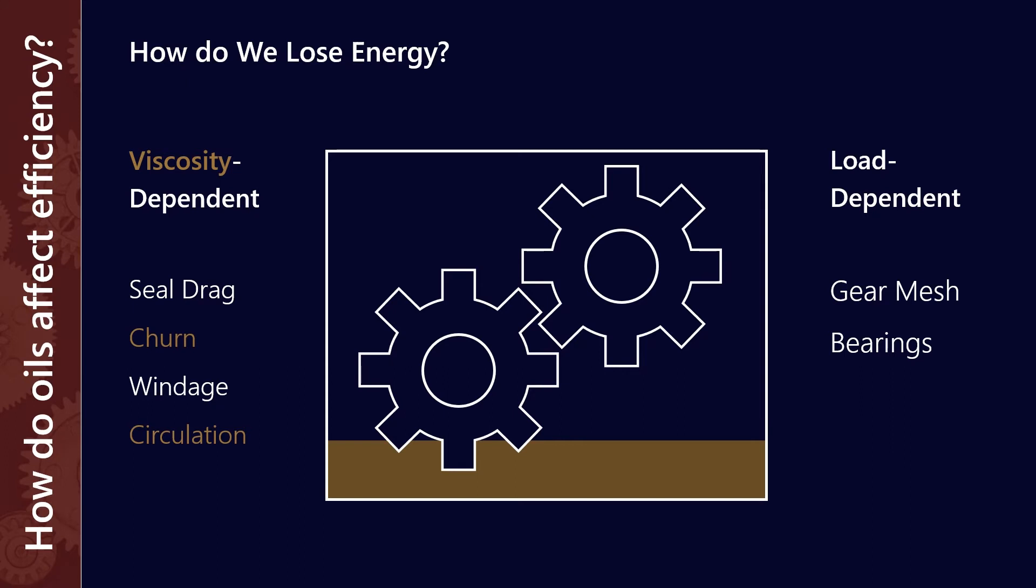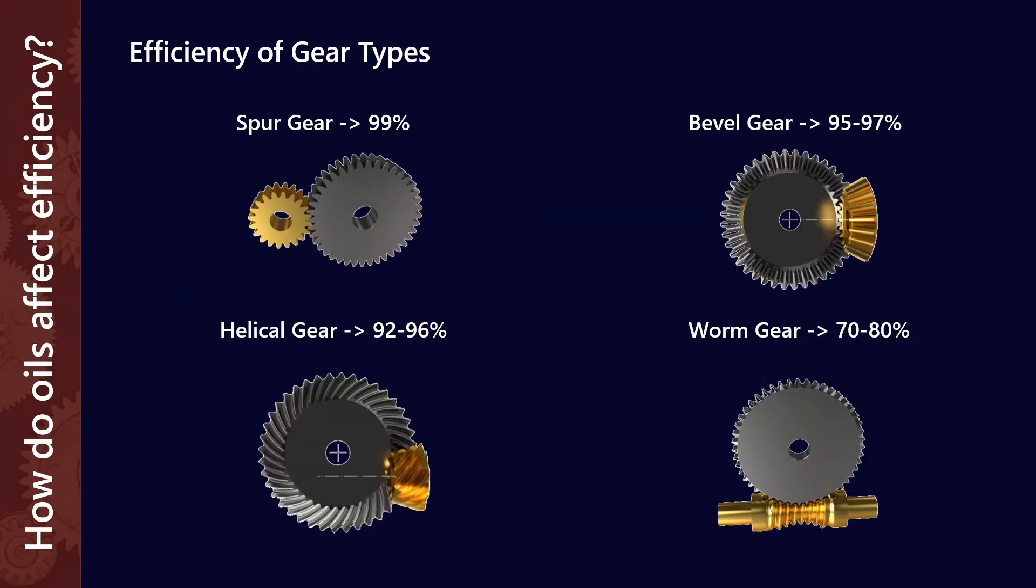Going back to our model, where we have viscosity dependent or speed dependent losses, we also have the load dependent losses, which we might think of as being traction coefficient dependent. So that is the gear mesh and the bearings.